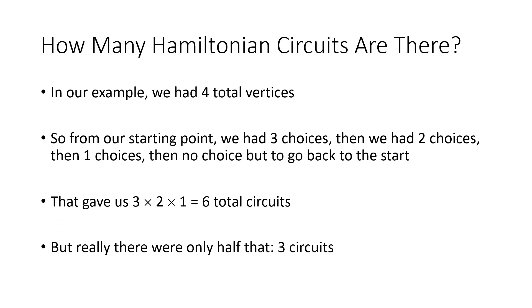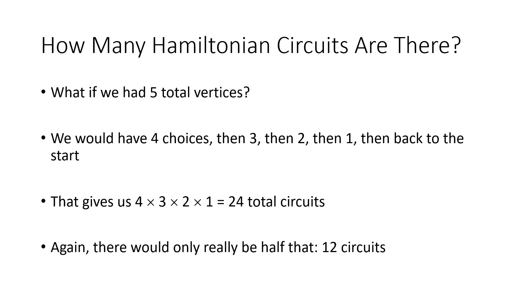To understand exactly how difficult this brute force method can get, let's think about how we count the number of circuits. In our example with four total vertices, at the first step we had three choices, then two, then one — giving us three times two times one, which is six possibilities. Really only about half that since each circuit was listed twice. If we had five cities, we'd have four times three times two times one, which is 24 total circuits — really only 12 unique ones.